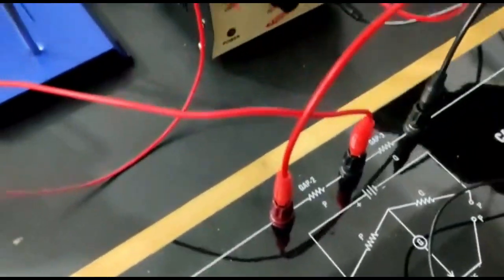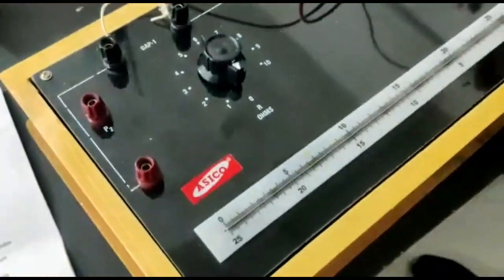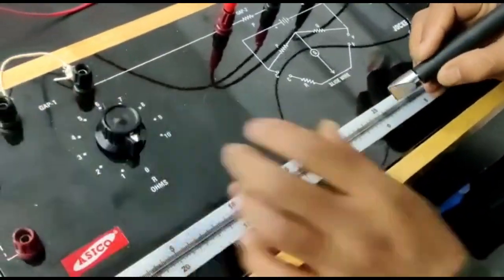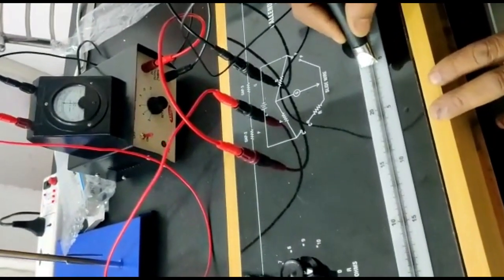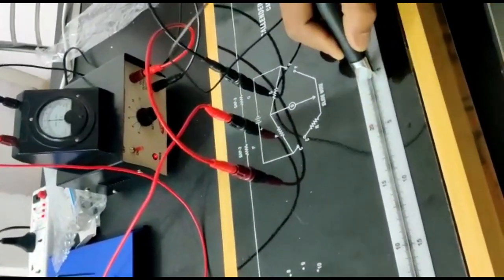Now we will switch on the battery eliminator and put it at 2V. With the help of the jockey, we will find out the balance point, the electrical zero. So here is the electrical zero.